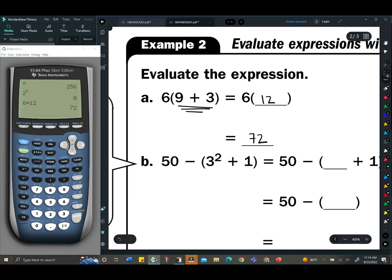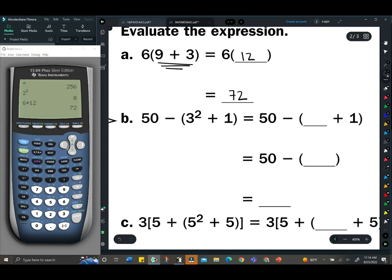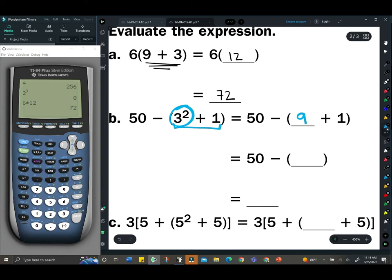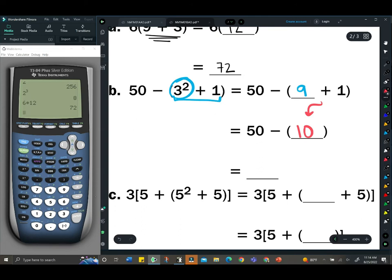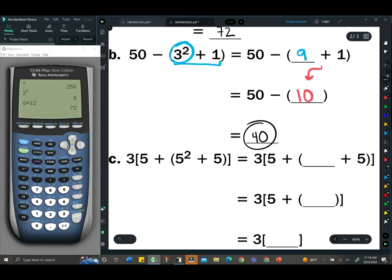The next one has parentheses, so this is like a mini order of operations inside. First we do 3², which is 9. Then we do 9 + 1, which is 10. Then we do 50 - 10, which is 40. That is the process.